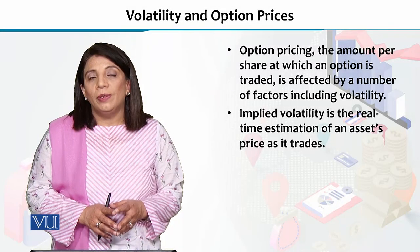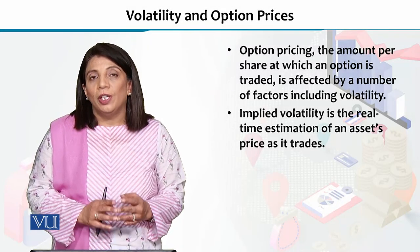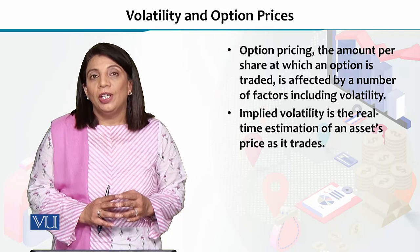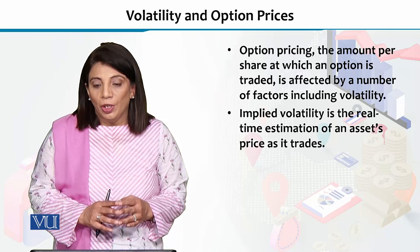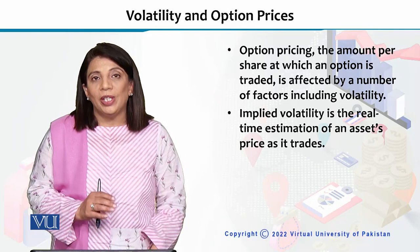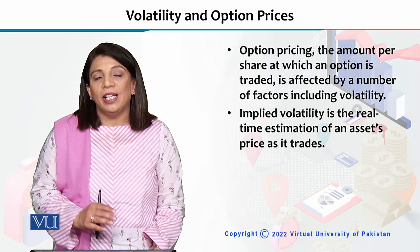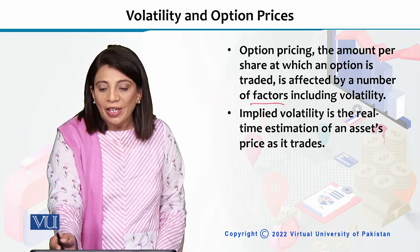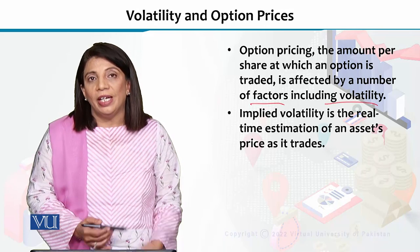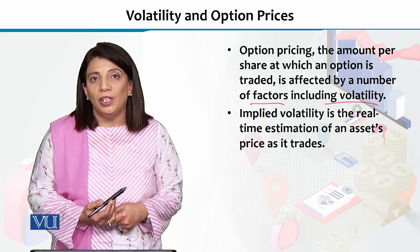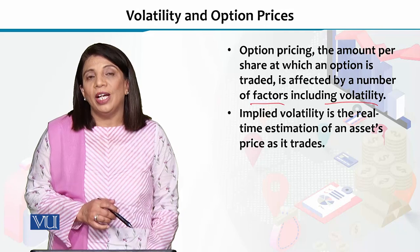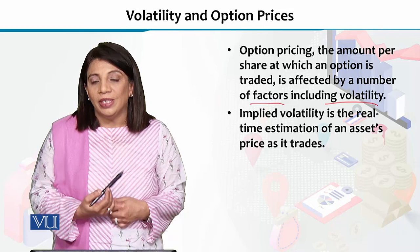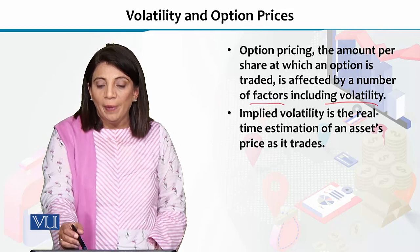When we look at the prices of stocks and decide the strike price of an option, there are a few things to be considered, because option ki jo prices hain woh kaafi dher sare factors ke oopar depend kerti hain. Un dher sare factors mein ek aham factor hai — that is called the volatility. Volatility ka matlab hota hai ki fluctuations in the price of that particular asset jis mein hum investment karna chahte hain.